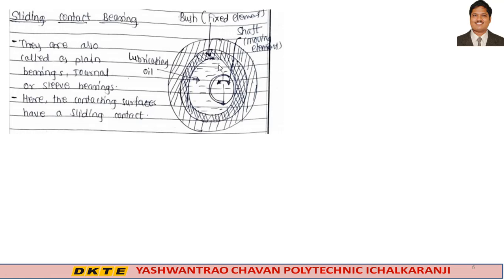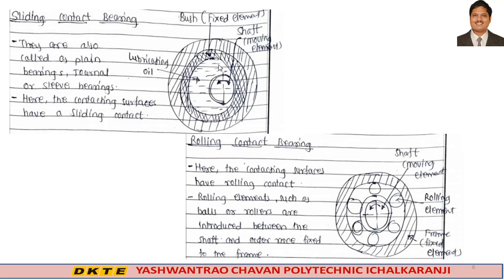The second type is rolling contact bearing. In rolling contact bearings, rolling elements such as balls or rollers are introduced between the shaft and an outer race fixed to the frame. The rolling action between the shaft and the fixed element reduces friction significantly.